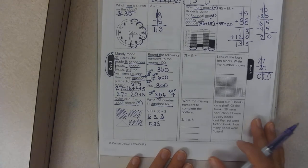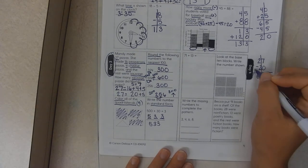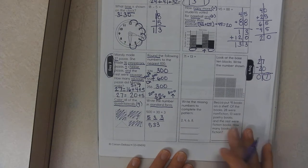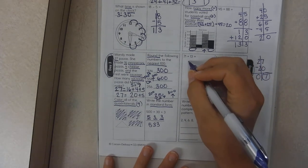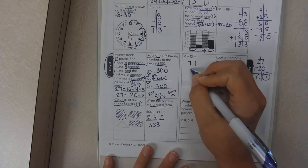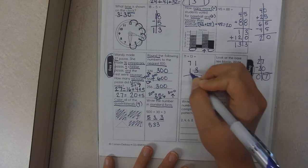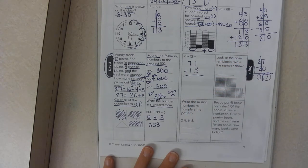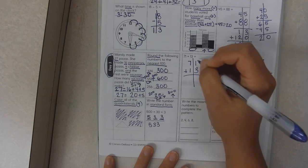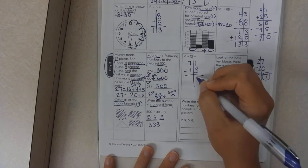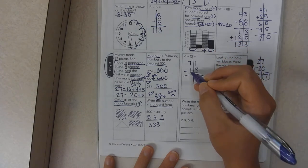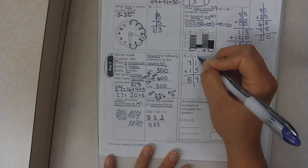Hello boys and girls, today we're going to be working on day four. We are going to do 71 plus 13. We're going to add this together. One plus three is four, seven plus one is eight, so it is 84.